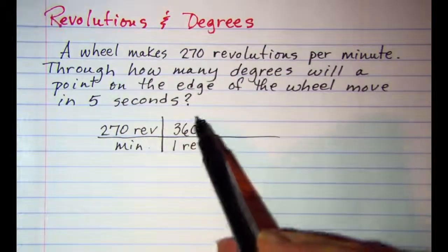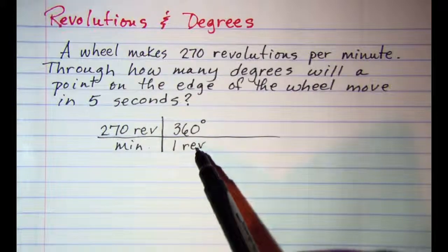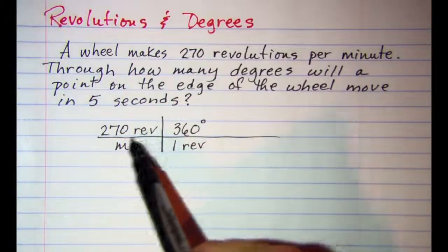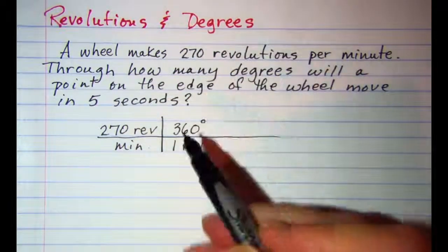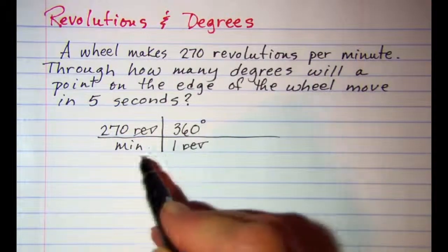So now this fraction is equal to 1, therefore it's called a unit multiplier. And I've not changed my initial rate, but I am now in degrees per minute.